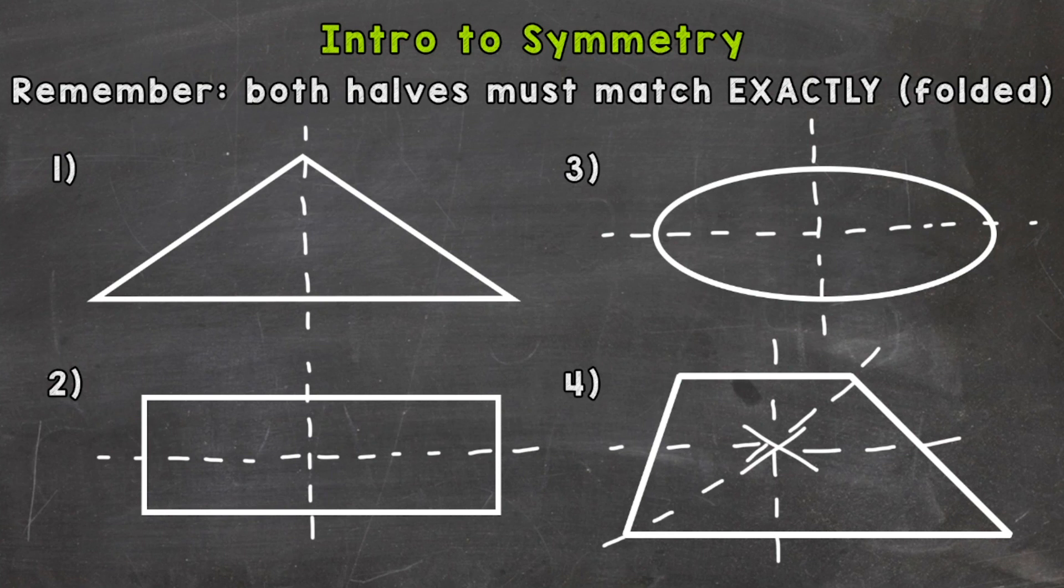Not every shape is symmetrical. Number four is not symmetrical, or you could say it's asymmetrical, which just means something is not symmetrical.